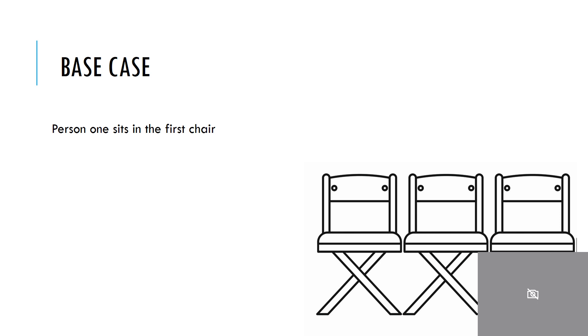Okay so our base case is that person one sits in the first chair. Well person one won't sit in the second chair because the second chair has a position whose number is greater than one.